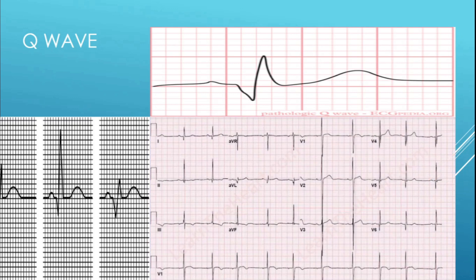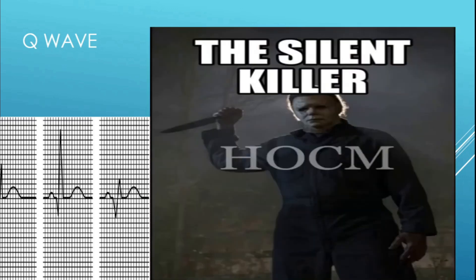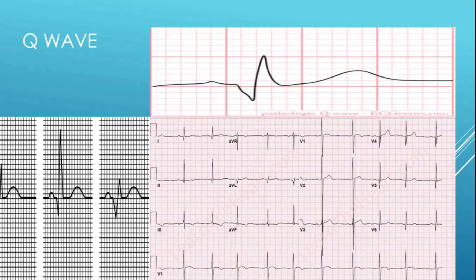The next type is dagger Q waves — deep, narrow Q waves that can be greater than 25% of the QRS complex but differ from pathological Q waves in that they are not wide. Looking in the lateral leads and V4, V5, you can see these deep, narrow Q waves. They are very ominous and should make you think of hypertrophic obstructive cardiomyopathy (HOCM) — these are the patients, like 14-year-olds, who suddenly collapse. The 12-lead computer may interpret this as LVH and flag a lateral MI, but if you see deep narrow Q waves with high voltage, start thinking HOCM.